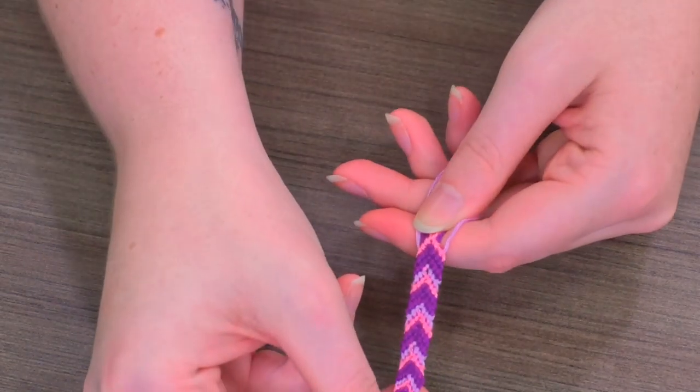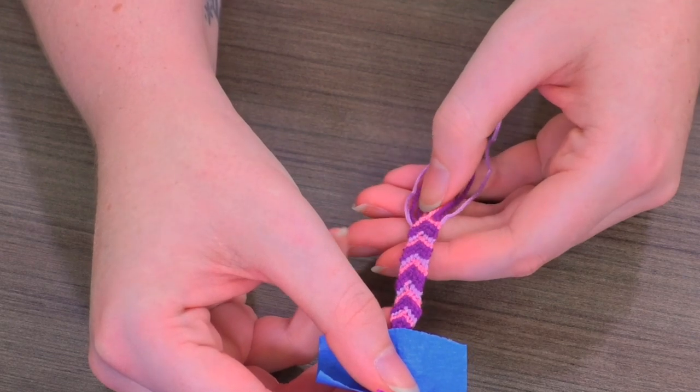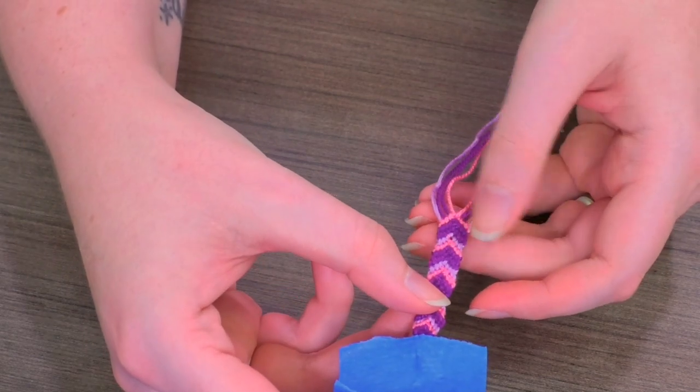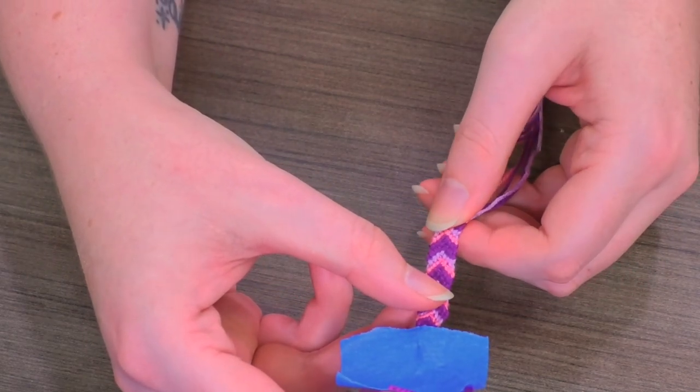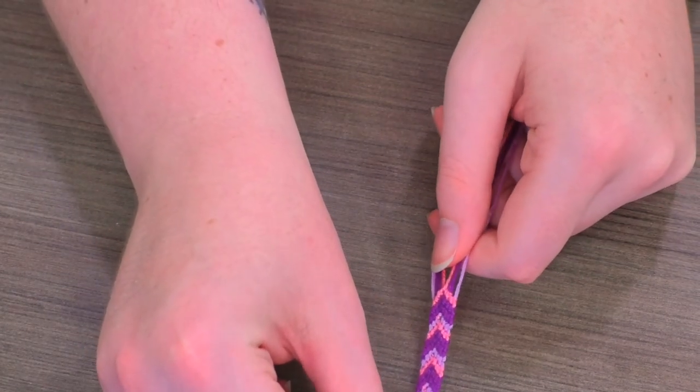If you would like to make a chevron pattern like this one, same process. You probably want to have eight strings instead of six or even more to make sure because you basically need double of whatever you're going to do. Same sort of thing. Tape it down.